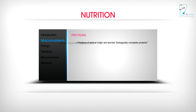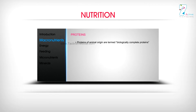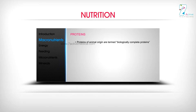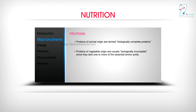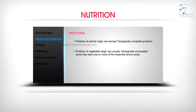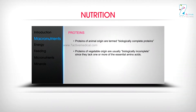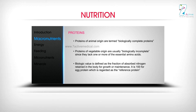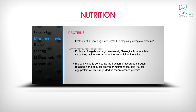Proteins of animal origin are termed biologically complete proteins, while proteins of vegetable origin are usually biologically incomplete since they lack one or more essential amino acids. Biologic value is defined as the fraction of absorbed nitrogen retained in the body for growth or maintenance. It is 100 for egg protein, which is regarded as the reference protein.